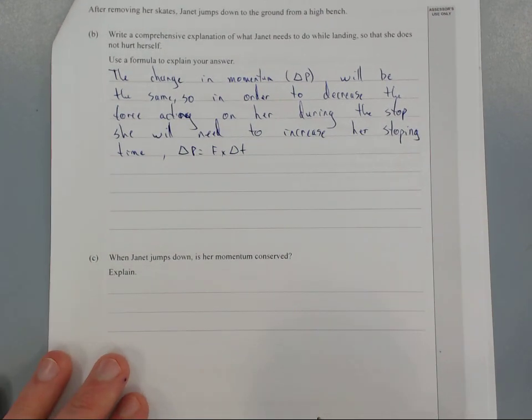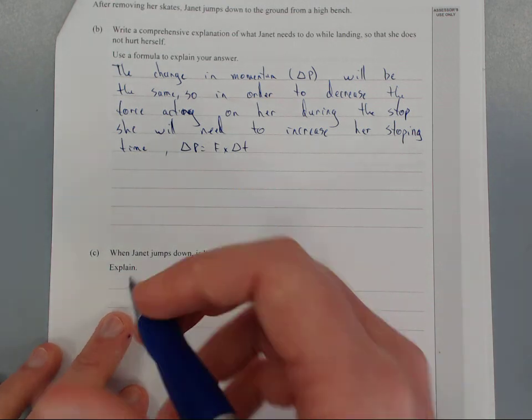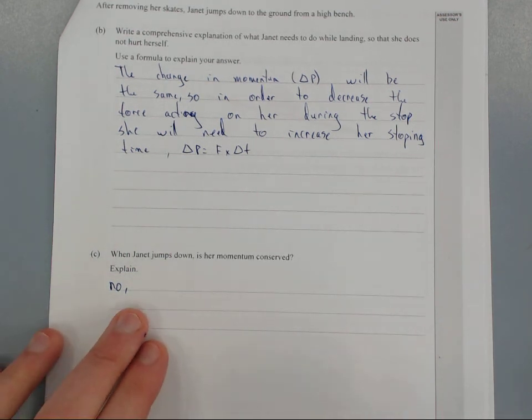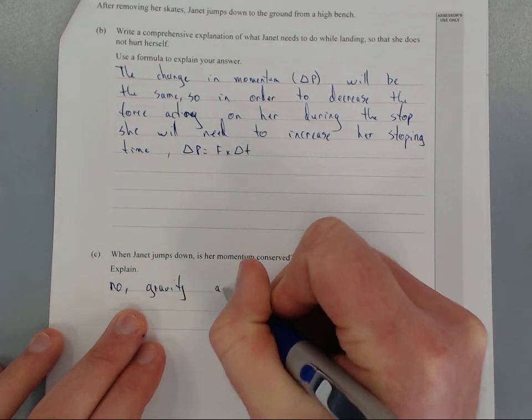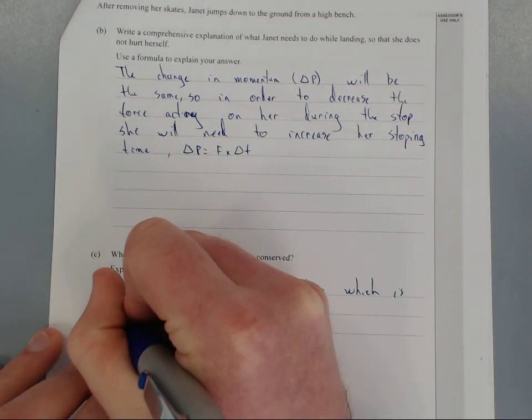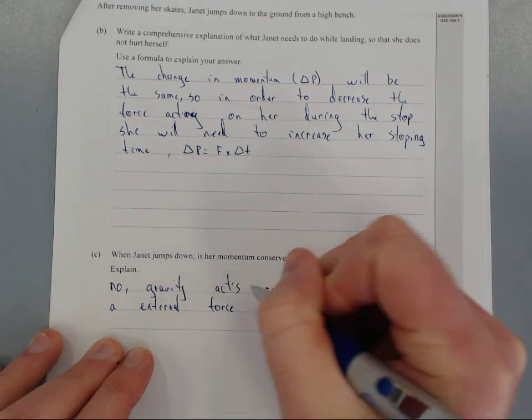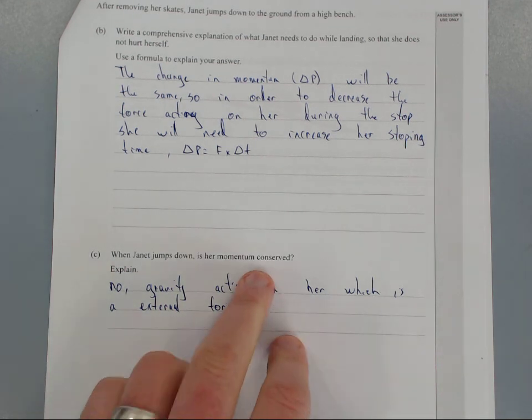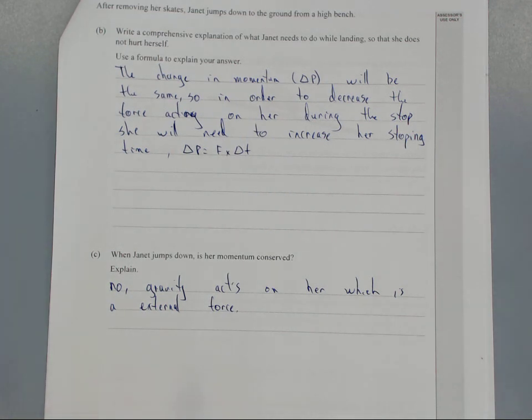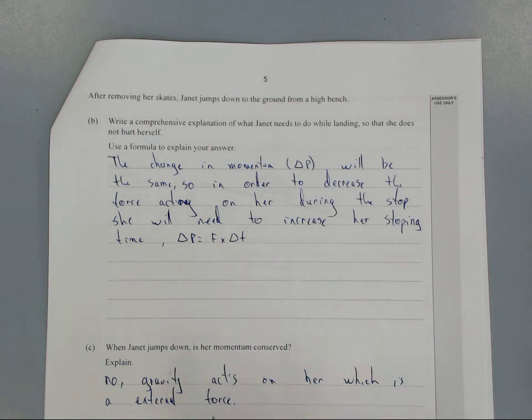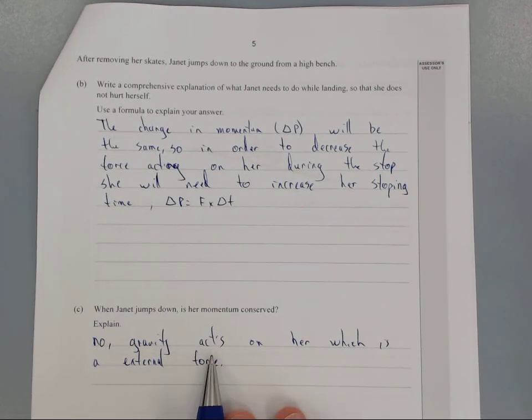When Janet jumps down, is her momentum conserved? No. Why? She's speeding up so her momentum is increasing. The reason being is gravity acts on her, which is an external force. Her momentum's getting bigger. In order for it to be conserved it needs to be the same. So no external force, and you need to state that it's an external force.